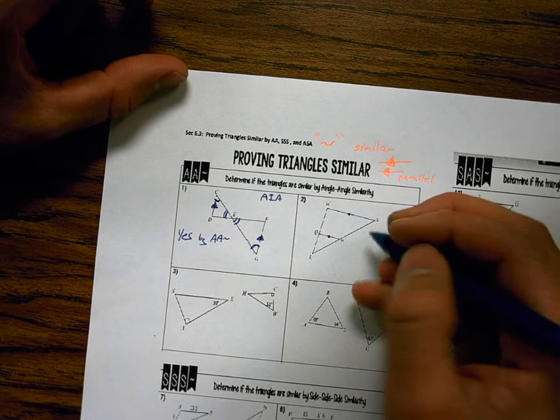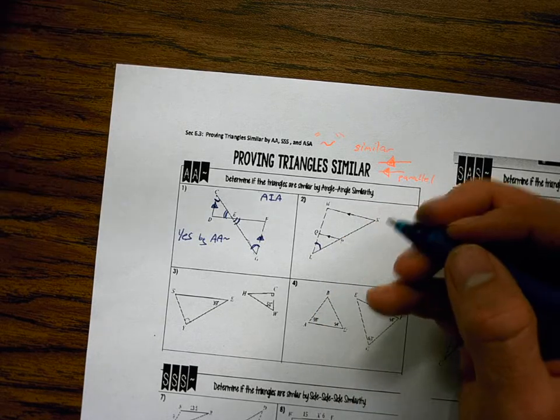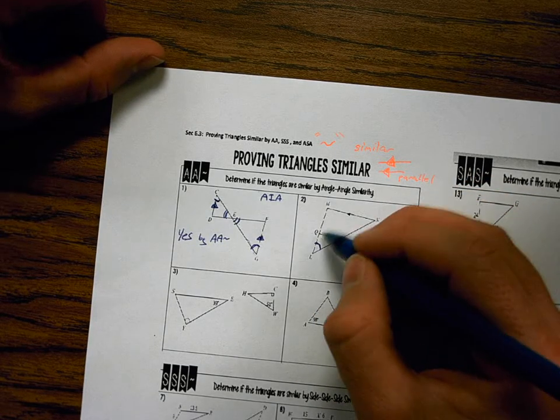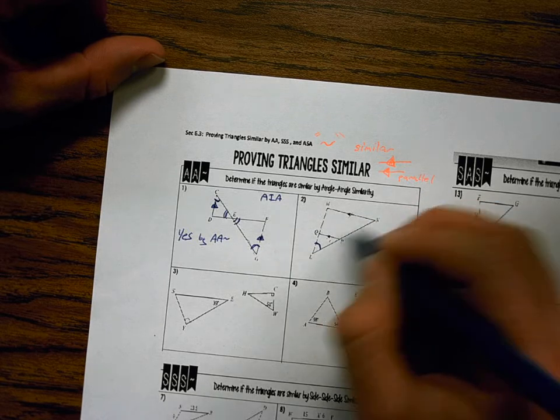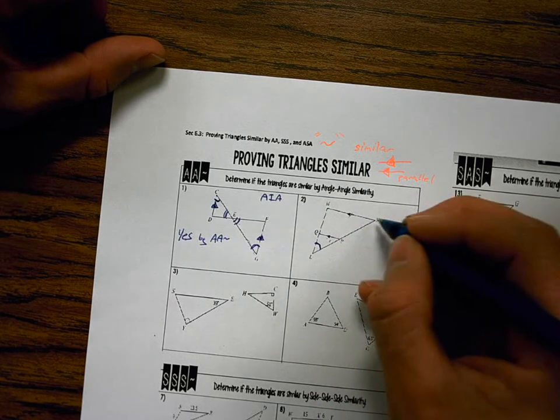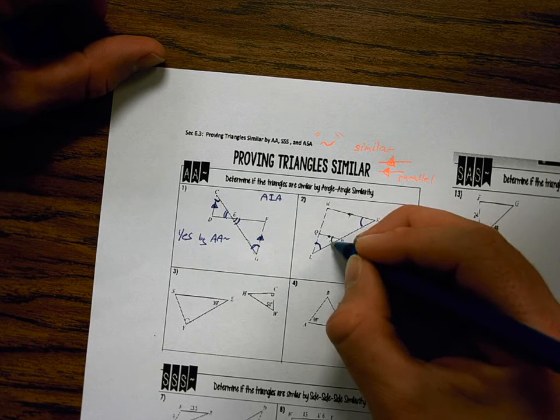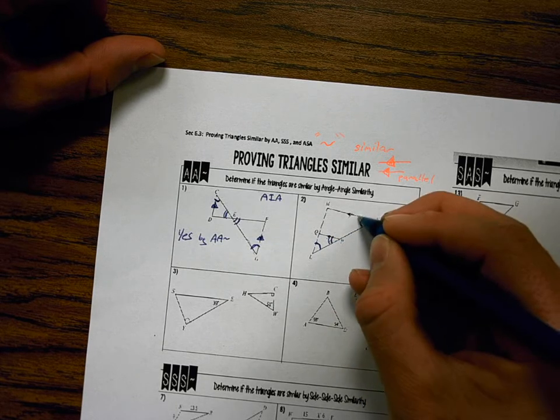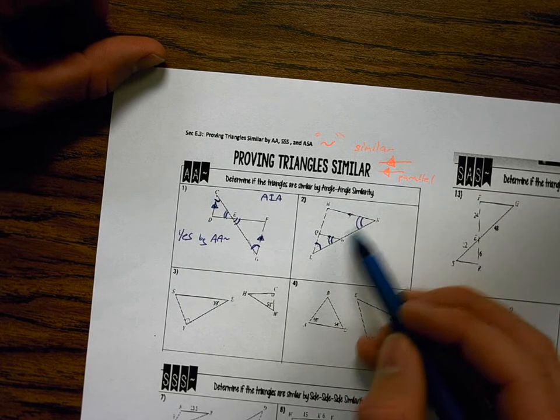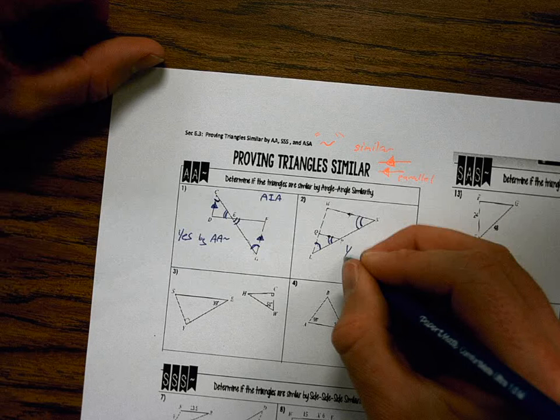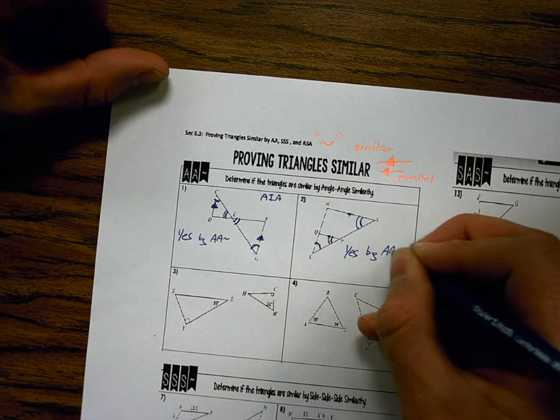Okay, I have these triangles over here. They're sharing an angle. Angle L is the same size in both triangles. I have two lines that are parallel cut by a transversal. This kind of looks like that trapezoid a little bit. So I get corresponding angles. So I have angle, and these two angles are congruent. So yes, by AA similarity.